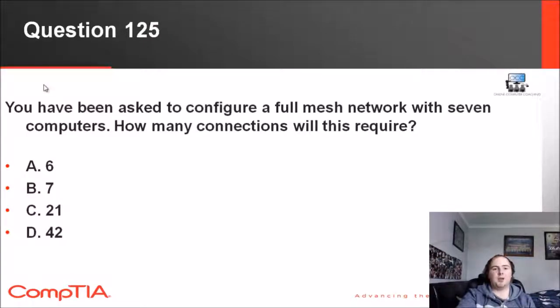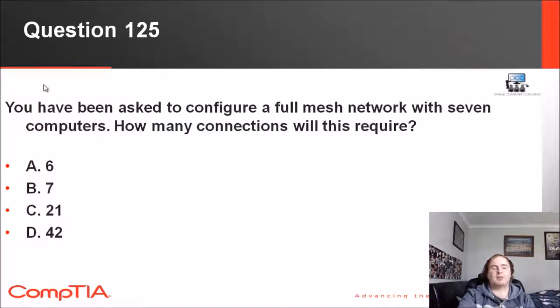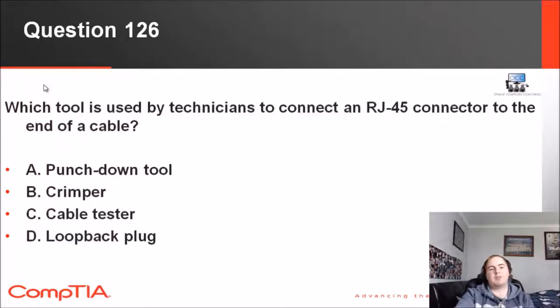125: You have been asked to configure a full mesh network with seven computers. How many connections will this require? Don't know why you're doing that, but anyway—six, seven, twenty-one, or forty-two. There's a formula to work this one out. It's n, bracket, n minus one, bracket, divided by two. So if we do the math there, the answer ends up being 21. Seven is n, n being the amount of computers, so that would be seven minus one—seven times six is 42, divided by two, which gives us 21.